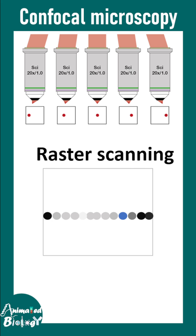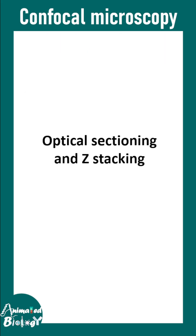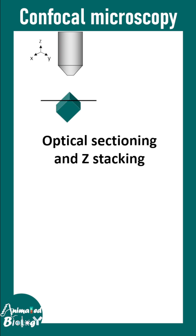Confocal uses a raster scanning method, meaning it scans the entire image point by point and reconstructs it — which is why it is also known as point scanning confocal microscopy. It also has the capability of Z-stacking, where the objective and motorized stage can move to optically section the specimen.